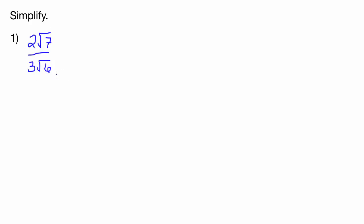So again, we're not allowed to have radicals in the denominator. So we're just going to multiply by √6 over √6. So that'll solve our problem there.